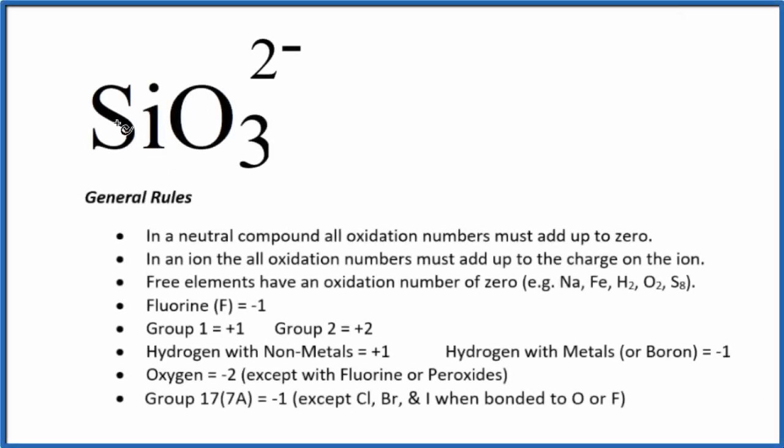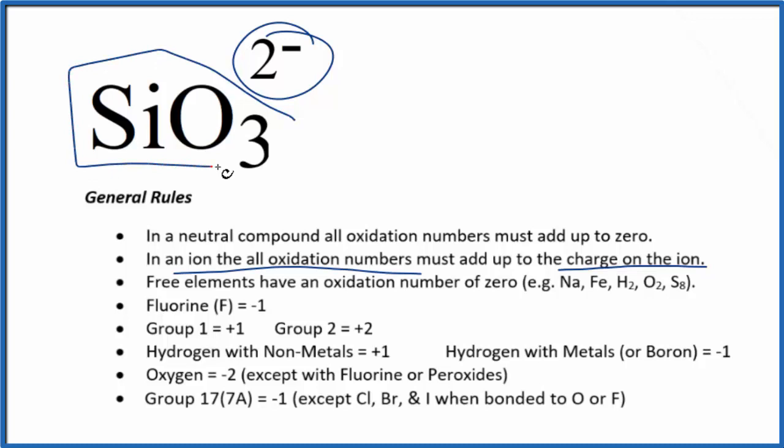To find the oxidation number of the Si in SiO3, the first thing we need to realize is that this is an ion. So all the oxidation numbers, when we have an ion, they add up to the charge on the ion. So if we look at the oxidation numbers here on the SiO3, that'll all equal minus 2.